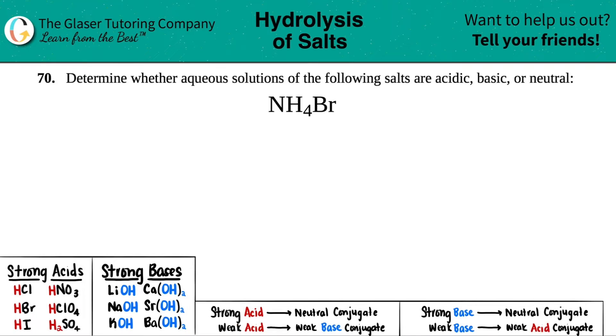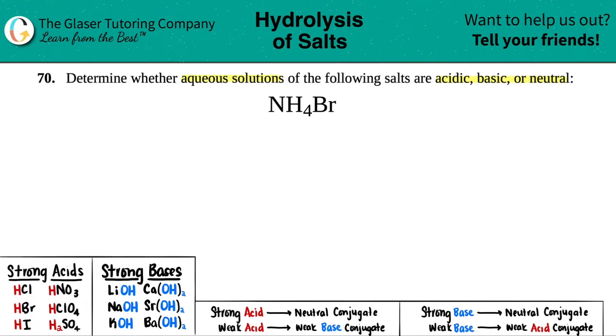Number 70: determine whether aqueous solutions of the following salts are acidic, basic, or neutral. And we have ammonium bromide, NH4Br.